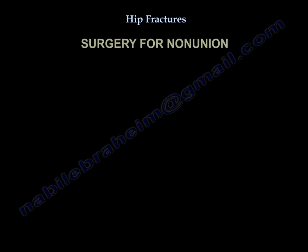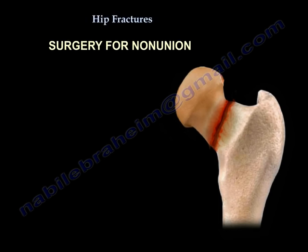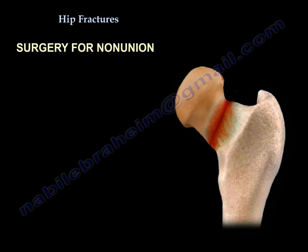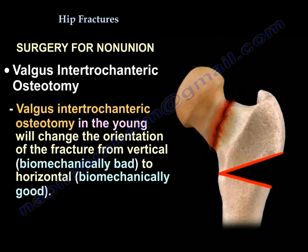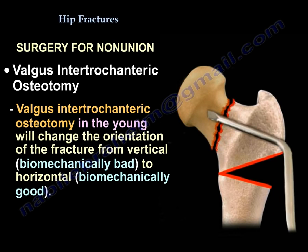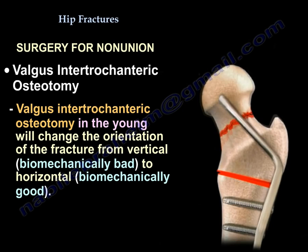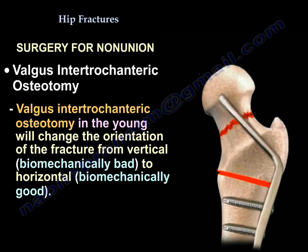For non-union surgery, you can use valgus intertrochanteric osteotomy. This changes the orientation of the fracture from vertical — which is biomechanically unfavorable — to horizontal, which is biomechanically favorable.